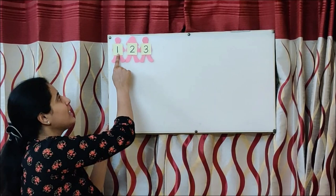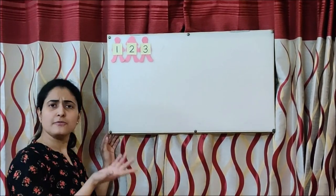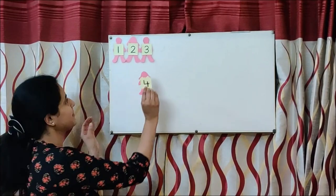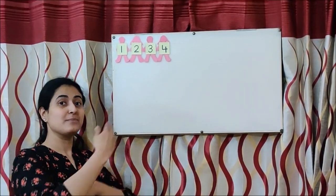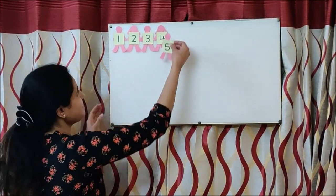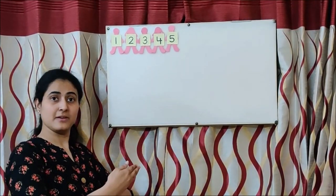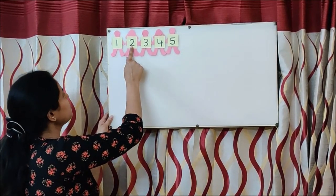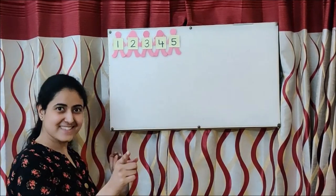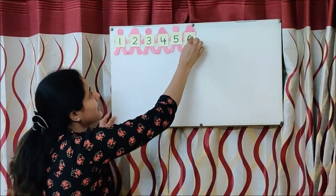Say with me again: One little, two little, three little Indians. What comes after three children? Yes. Four. What comes after four? Five. Very good. What comes after five? Let us see: one, two, three, four, five. Six. Correct. Six.